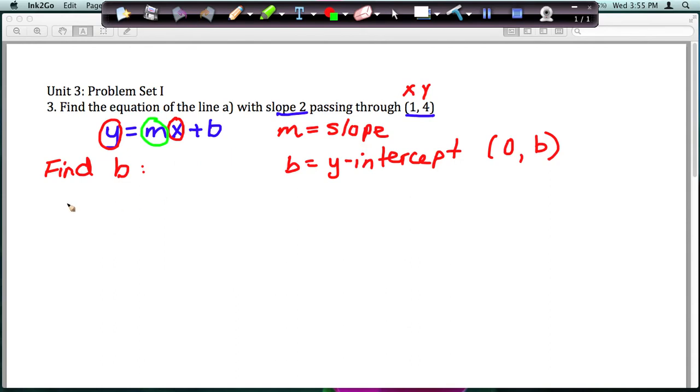I'm going to plug in for y, we have 4 equals, my slope is 2, my x value of my point is 1, plus b. And now we'll simplify. So 2 times 1 is 2.